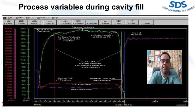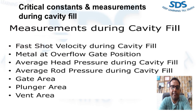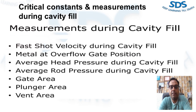To control vent velocity, the vent area at the smallest opening should be accurately measured and maintained. The vent opening may become smaller over time due to die closing force deflecting and flattening the die parting surface. To calculate the above cavity fill parameters, several other process variables must be determined. The first is average plunger velocity — the average velocity during cavity fill. The second is metal at overflow gate position, which the monitor must know to accurately calculate cavity fill variables. The third is average head pressure during cavity fill, important for discharge coefficient calculation and preventive maintenance.